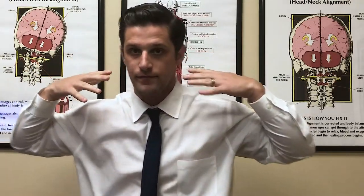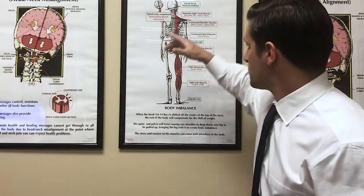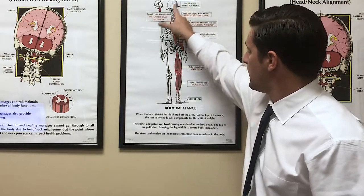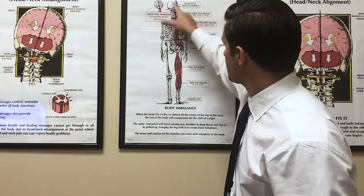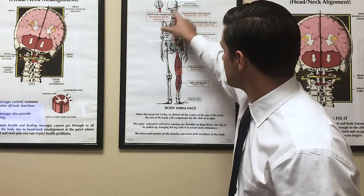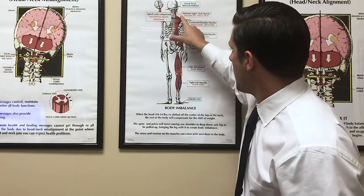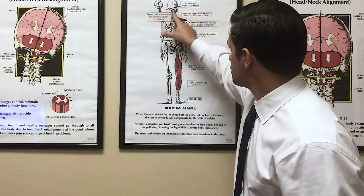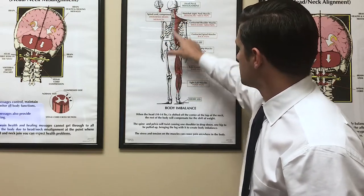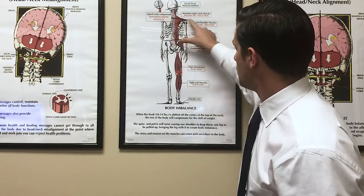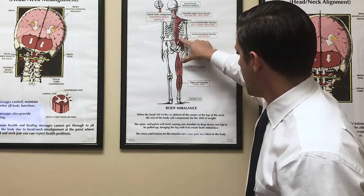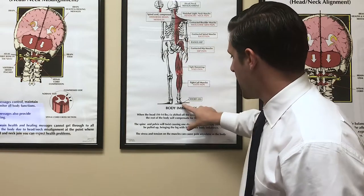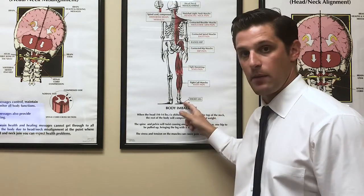As we can see here, when the upper spine is misaligned it forms a chain reaction through the spine, causing a low shoulder, a low hip, and then finally a short leg at the bottom.